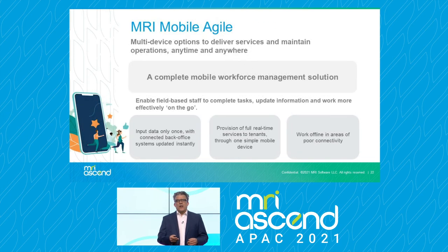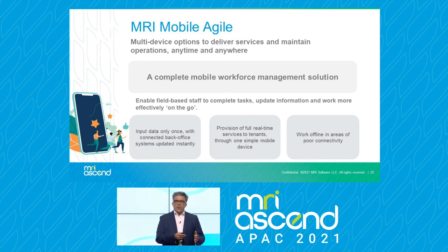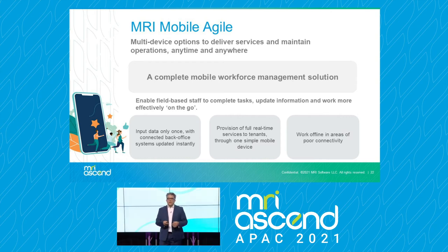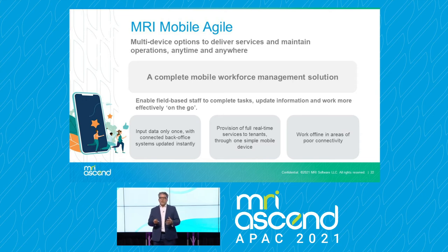Another application growing in popularity within the social housing sector is the mobilisation of our housing product. Globally, our mobile application is used by 70 social housing customers ranging from less than 1,000 properties all the way up to 70,000-plus properties under management. I'm also happy to announce that in 2021 we have gone live in Australia with our first mobile agile client. The app effectively mobilises your housing solution to iOS, Android or Windows mobile devices safely and securely, underpinned by powerful data access allowing full online and offline working, with a user-friendly and highly intuitive interface built on platforms native to your devices.